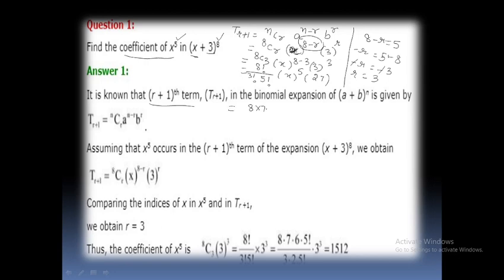Expanding: (8 × 7 × 6 × 5!)/(3 × 2 × 1 × 5!). Cancel 5!. Then simplify (8 × 7 × 6)/(3 × 2 × 1).